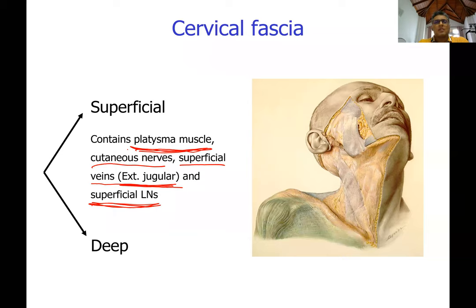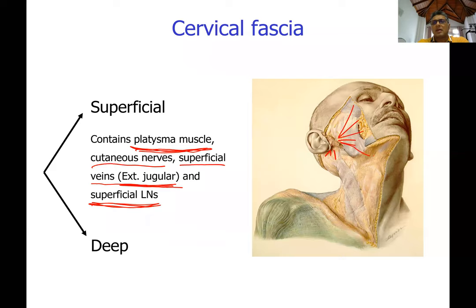The facial nerve is the nerve that supplies muscles of facial expression. It has several branches — there are five main branches after it passes through the parotid gland, and before that it gives three branches, so altogether there are eight branches given by the facial nerve. The facial nerve has eight branches when it comes out from the stylomastoid foramen, and five of these branches are given in the parotid gland. The fifth branch is the cervical branch, which is the branch that supplies the platysma muscle. So platysma belongs to the group called muscles of facial expression, even though it is in the neck.